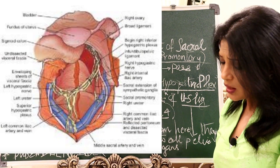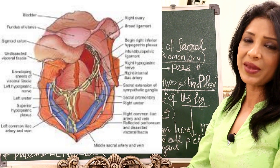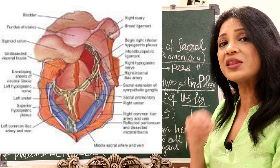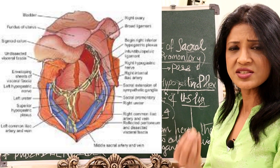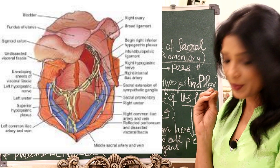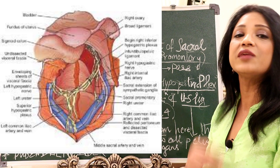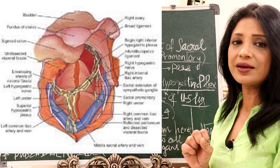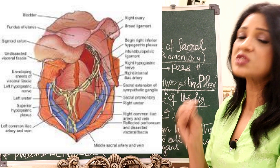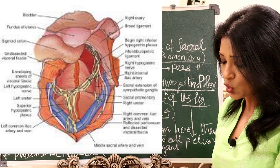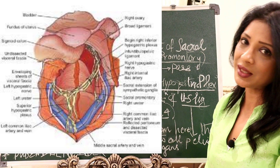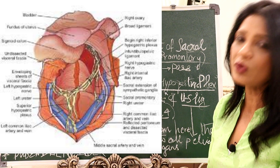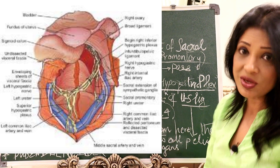Coming to pre-sacral neurectomy — when a patient has severe chronic pelvic pain, or even after uterus removal where nerves remain highly sensitized, nerve block may be needed. Pre-sacral neurectomy is also done in cases of endometriosis, even after removing the ovaries and uterus. It is not very frequently done and not many surgeons are trained to perform it.